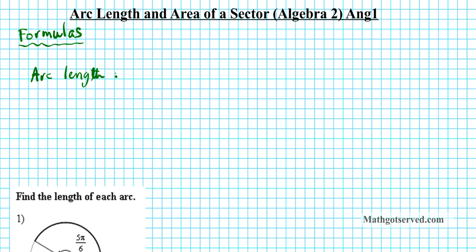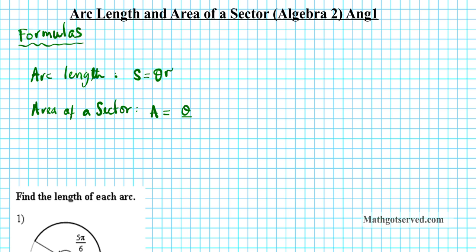Let's go over the arc length. S is the length of the arc, equals theta times the radius. Then the formula for the area of a sector — let's call it A equals theta over two, R squared.